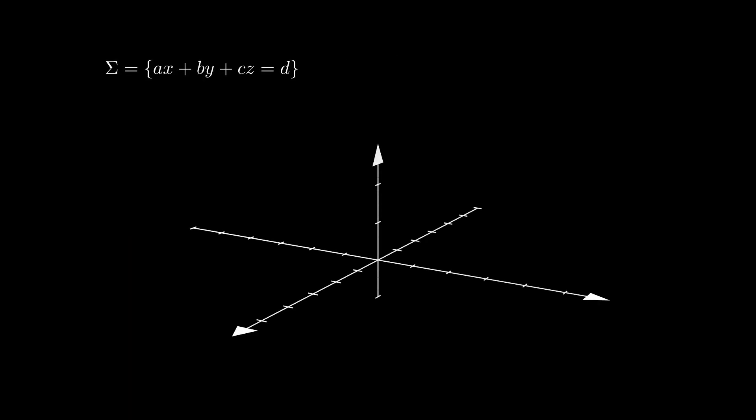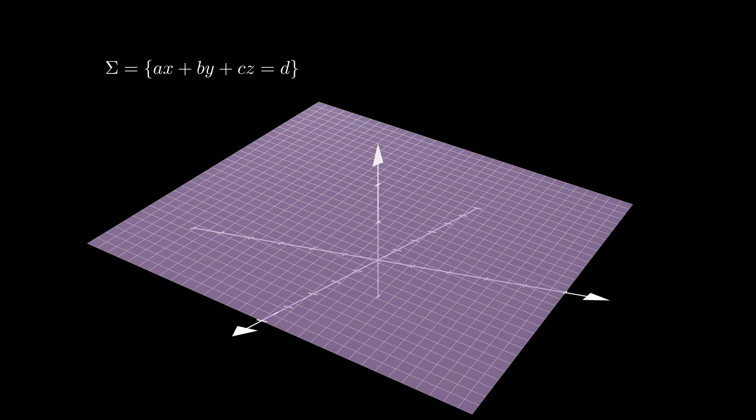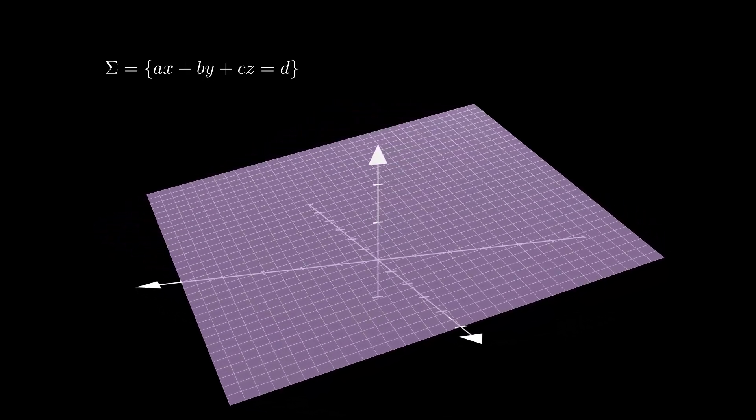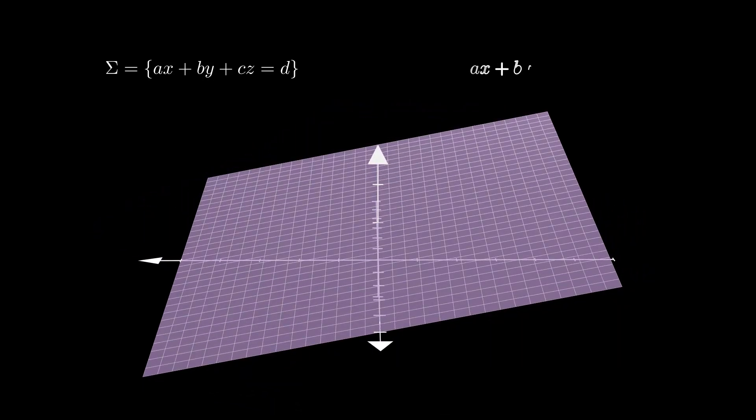If sigma is the plane given by the equation ax plus by plus cz equals d, then by isolating z in this equation, we can describe sigma as the graph of the function (d minus ax minus by) over c, of course, provided c is not zero.